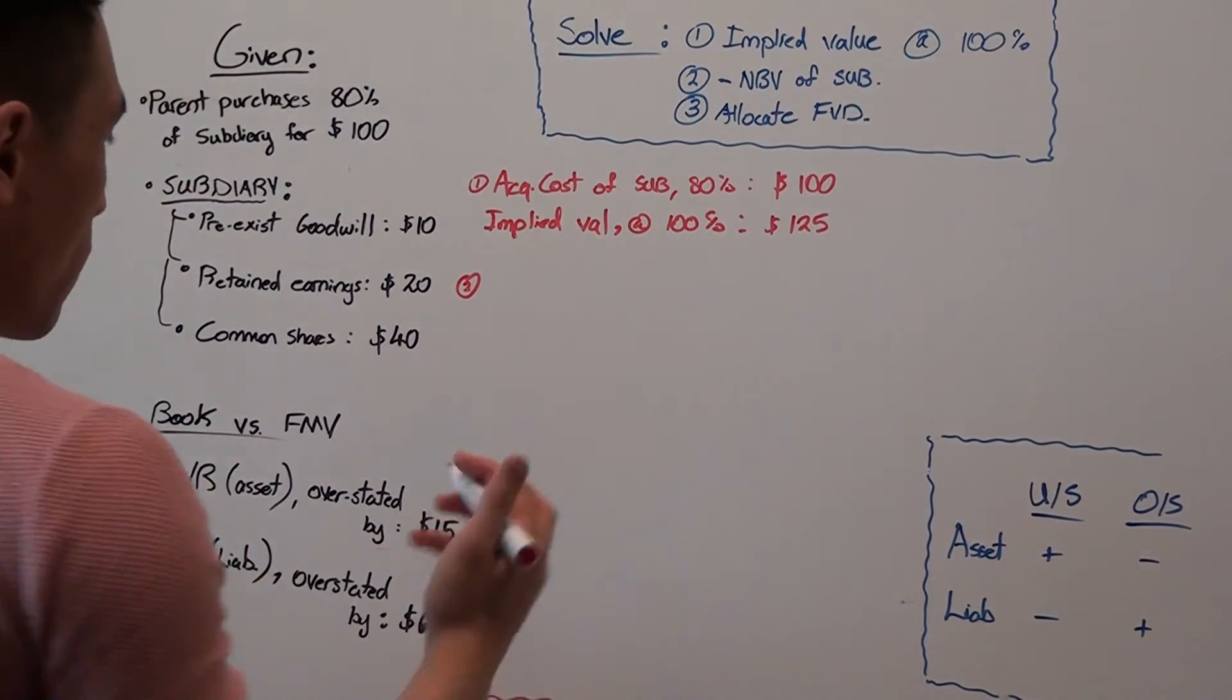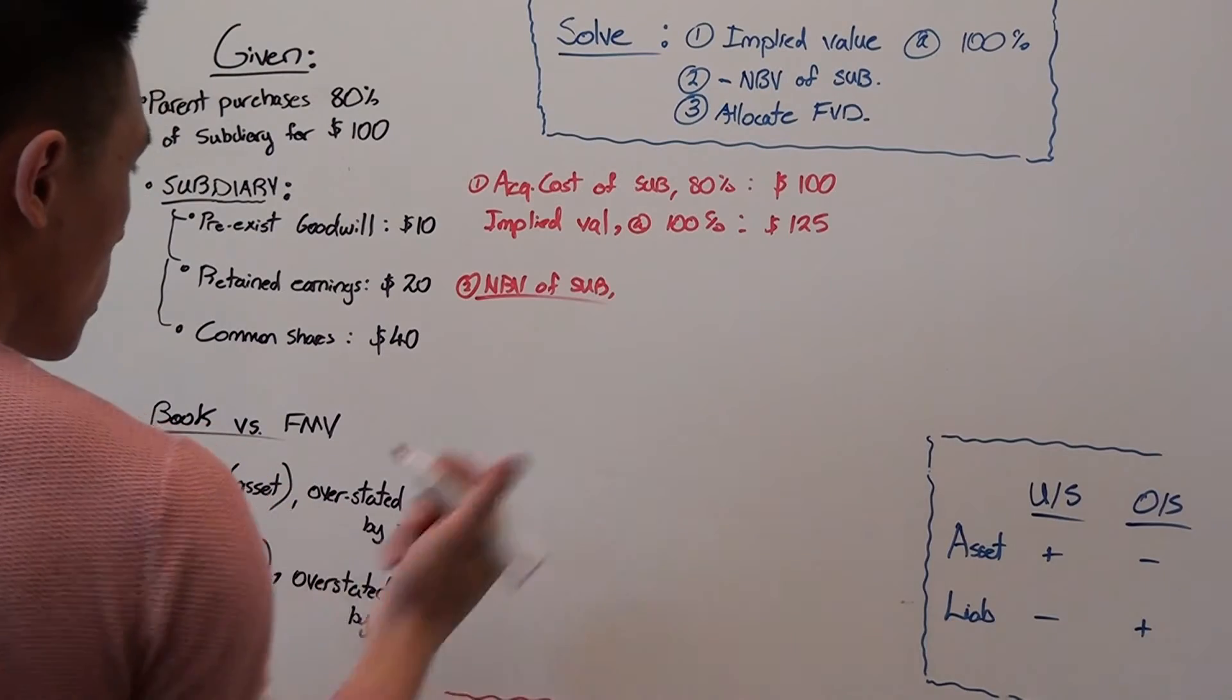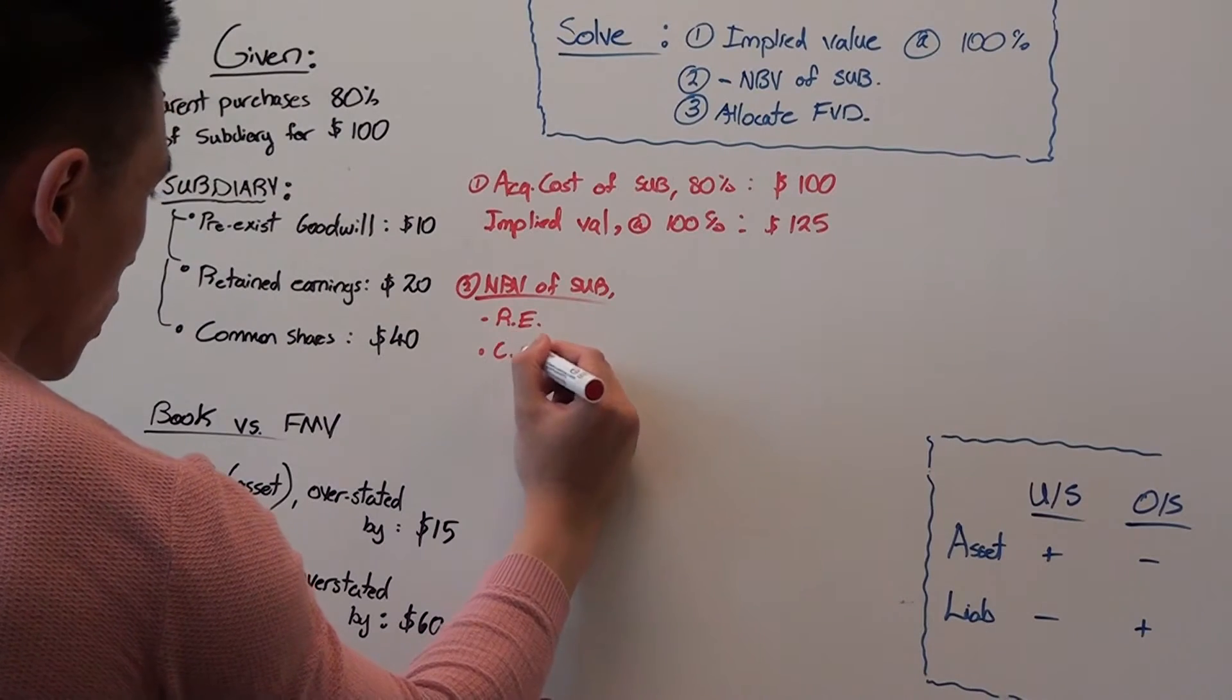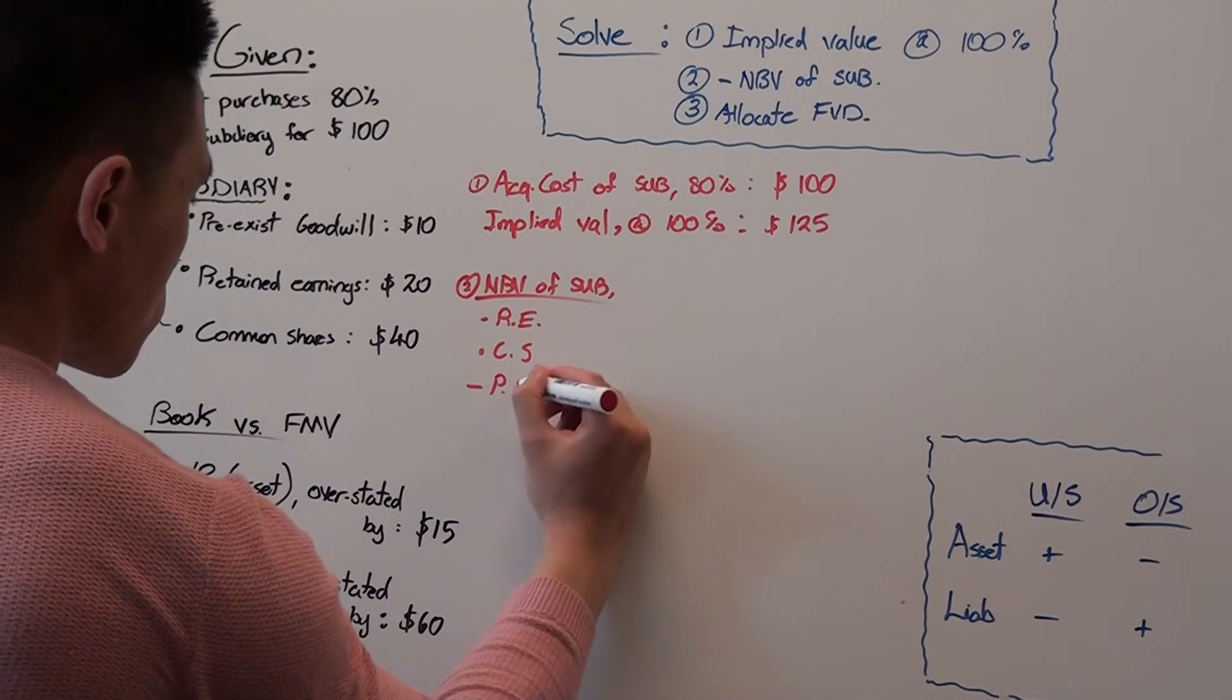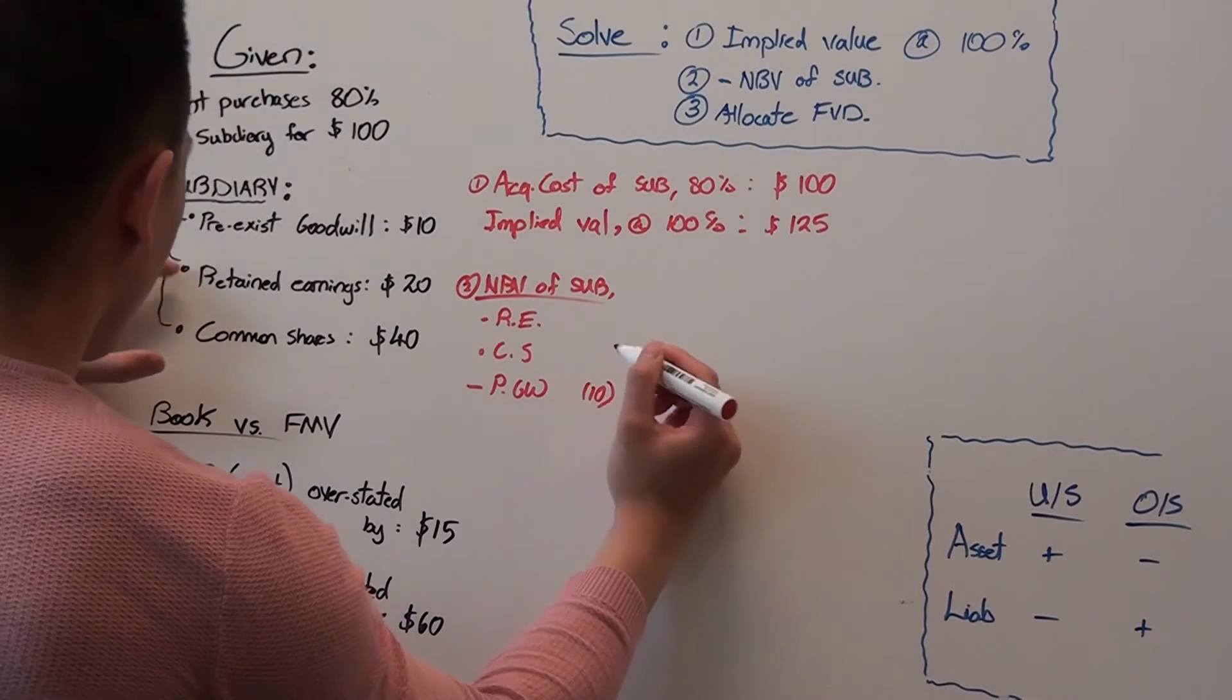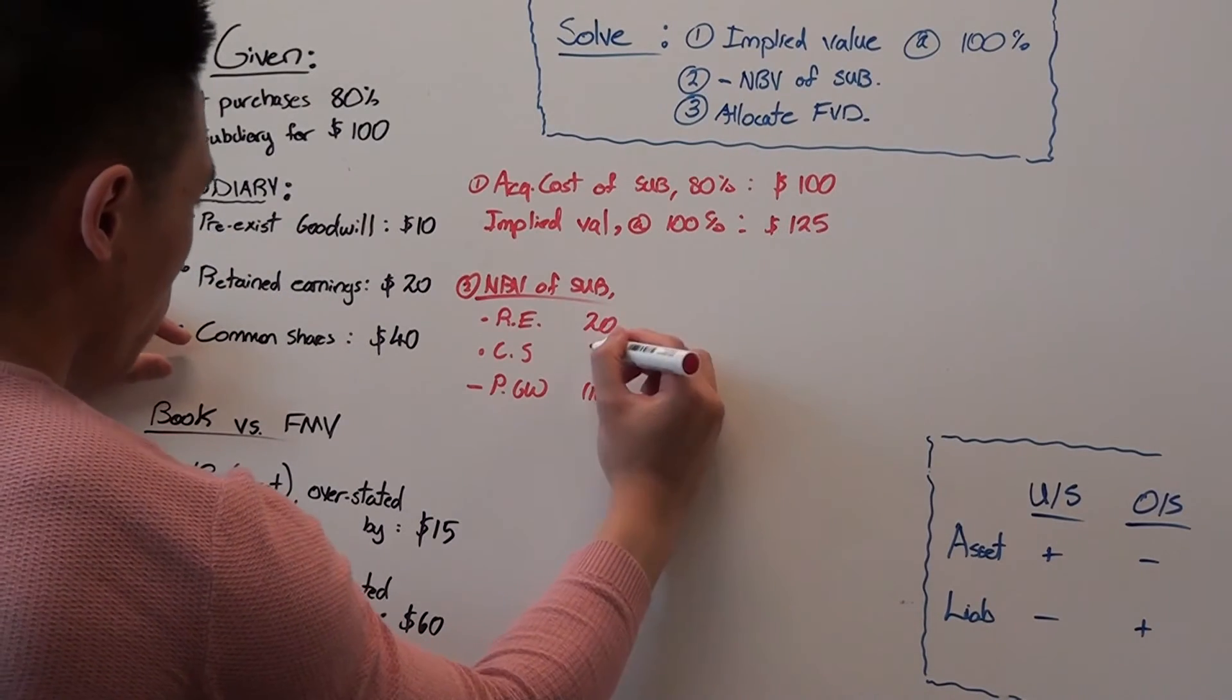And then the second phase is to find the netbook value of the sub. The netbook value consists of retained earnings, the common shares, and we also have to remove pre-existing goodwill. So pre-existing goodwill was $10, retained earnings was $20, and common shares was $40.